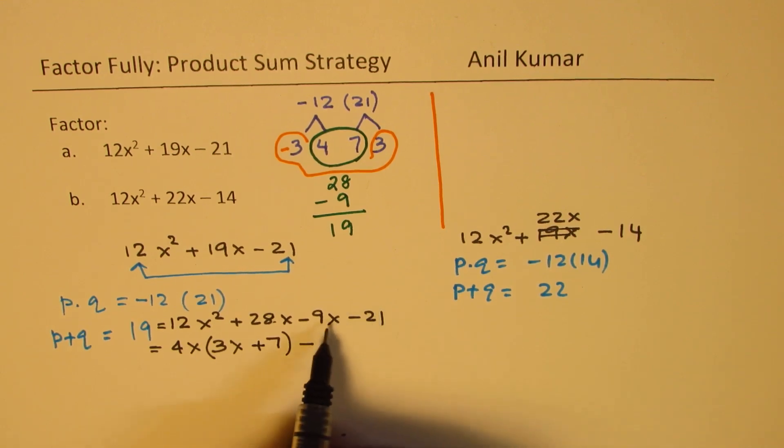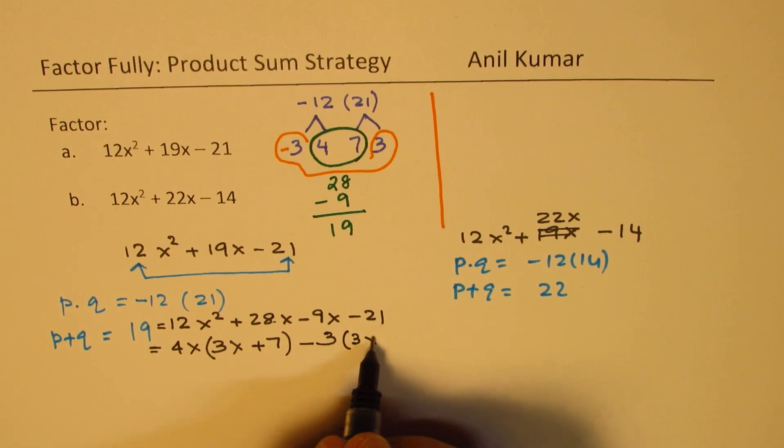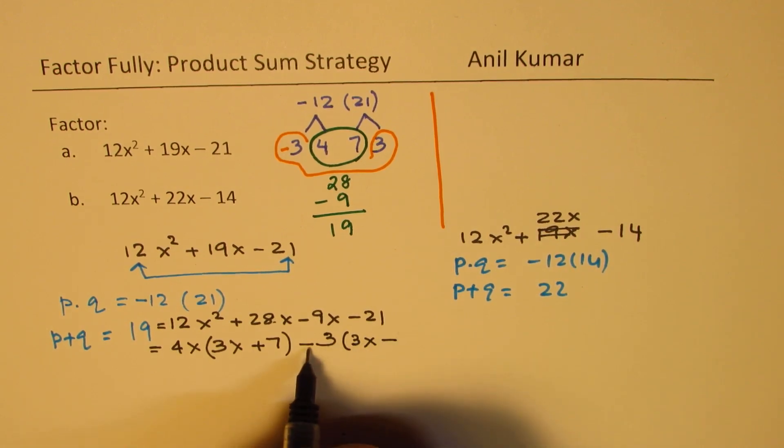Minus. In this case, 3 is common. So we'll take 3 common. So we get 3x. We have already taken minus. So we get +7 here also.